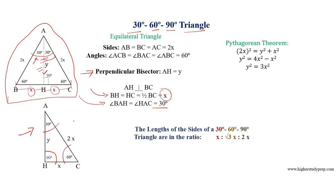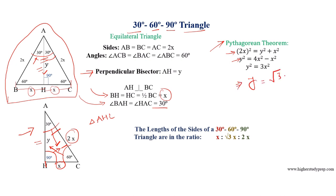Considering the 30-60-90 degree triangle AHC, the side opposite 30 degrees equals X, and the side opposite 90 degrees — the hypotenuse — is 2X. To find the length of Y, the perpendicular bisector, which is the side opposite 60 degrees, we apply the Pythagorean theorem. This gives us Y equals the square root of 3 multiplied by X.